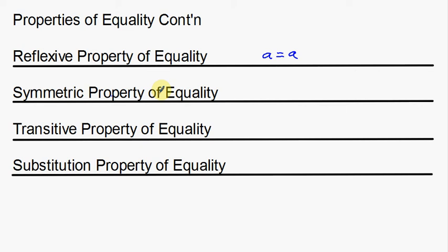The symmetric property is a little bit more complicated. If A is equal to B, then B is equal to A. That basically is just switching it around. If we have an equality statement, one side is equal to the other side, then the other side is also equal to the first part. Not overly complicated — these are very basic ones. But the symmetric property is really useful once we start doing algebraic proofs.